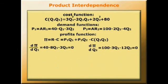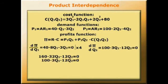There are many ways to do this, but one obvious way is to multiply the first equation by 4, and then we can simplify very easily. So 160 - 32Q1 - 12Q2 = 0, and the second one is 100 - 3Q1 - 12Q2 = 0. Now we can eliminate the terms -12Q2 and we get 160 - 32Q1 = 100 - 3Q1.